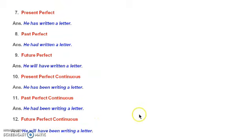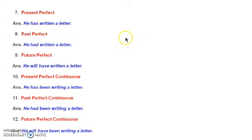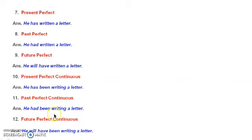I hope children, now it's clear to you. You need to practice more on this concept. From your textbook, in exercise number 2, there are six different sentences given. Select any two sentences and write the 12 different tenses of those sentences. We'll do exercise number 3 later on. Thank you so much. Bye-bye.